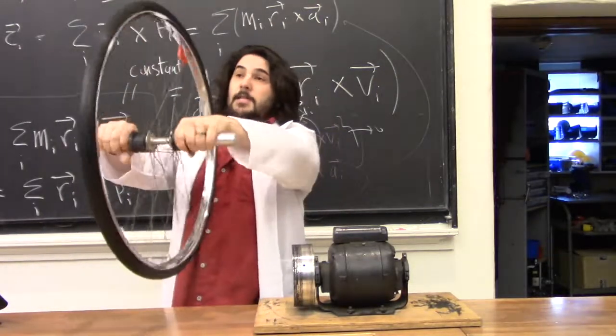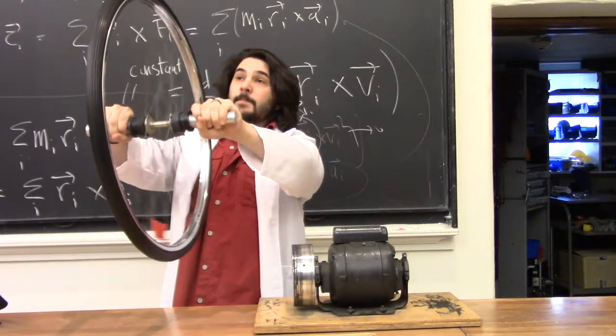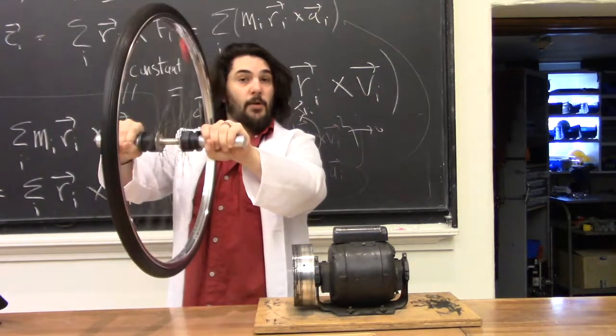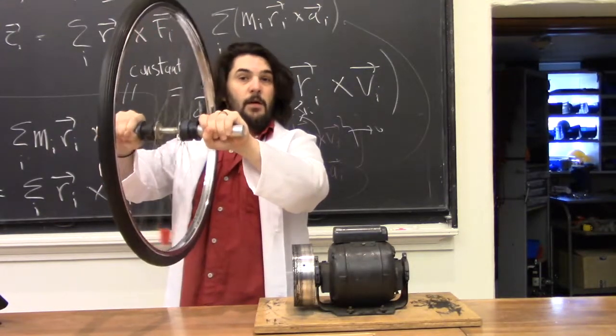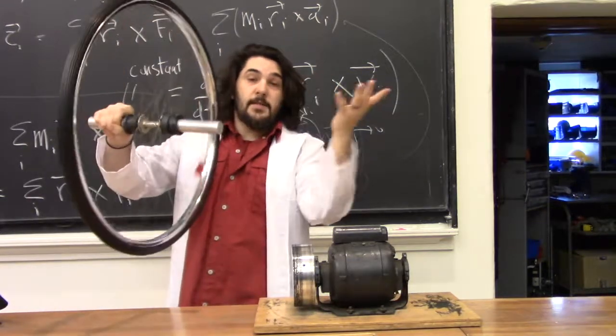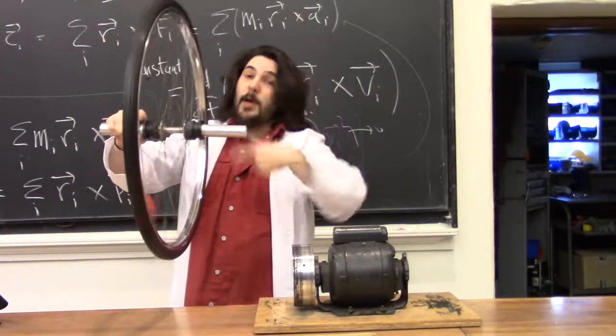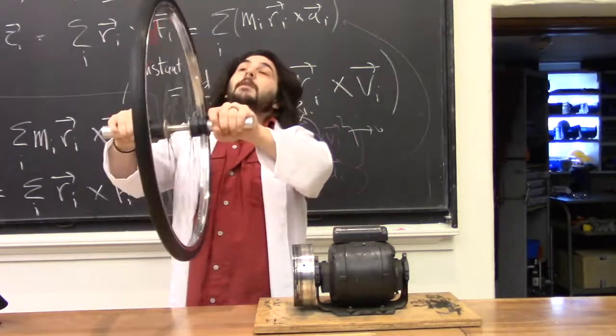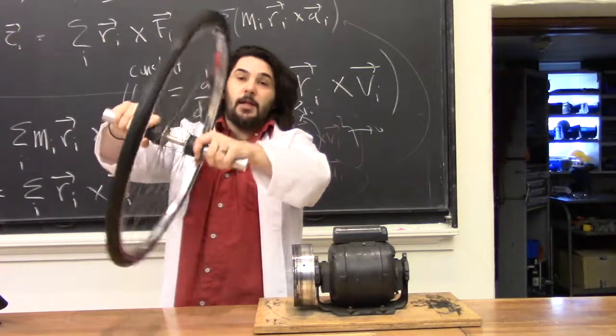If this bike wheel is spinning this way and I'm holding it up like this, our total angular momentum this way is still zero because it's spinning this way, not this way. But if I were to turn it this way while it's spinning, the bike wheel is spinning in this direction now.